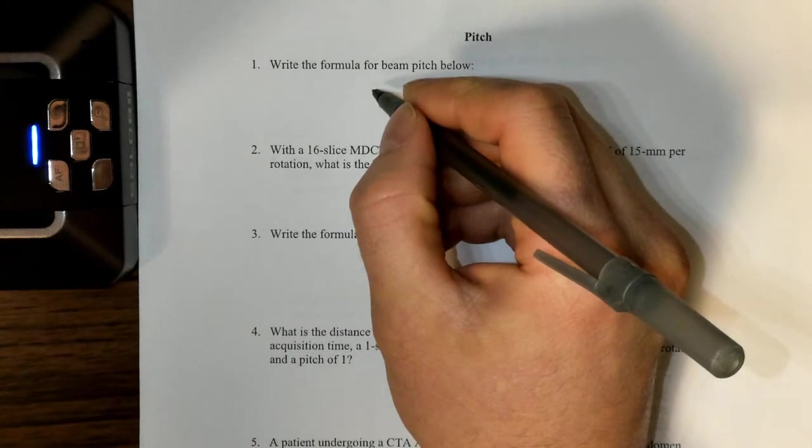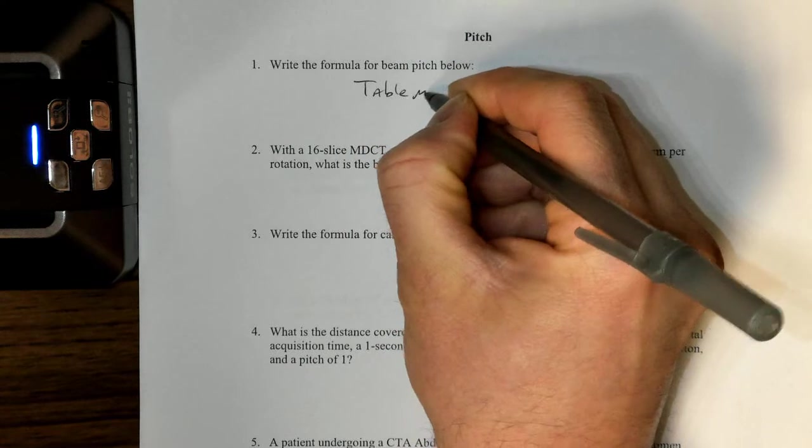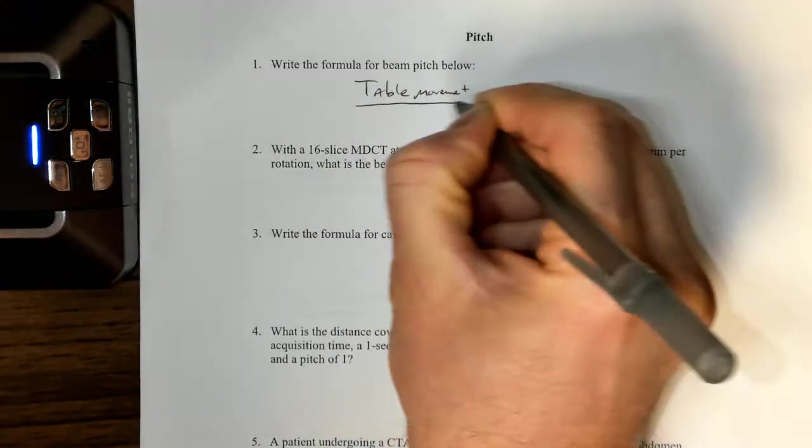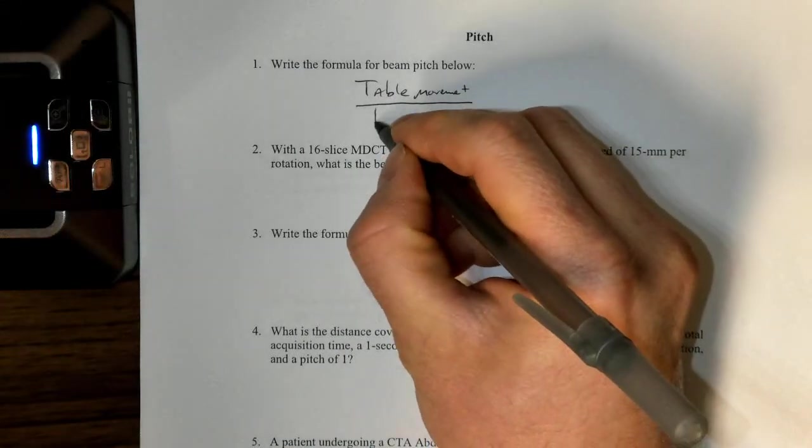The formula for beam pitch—and I should point out that beam pitch is the only kind of pitch that we are concerned with—is table pitch or table movement, the amount that the table moves in and out of the CT scanner, which happens along the z-axis, divided by the beam width.